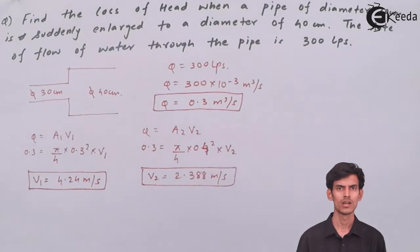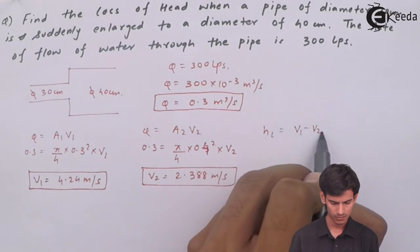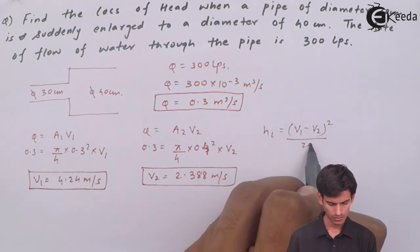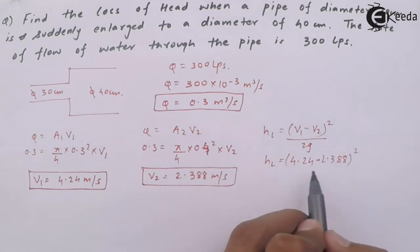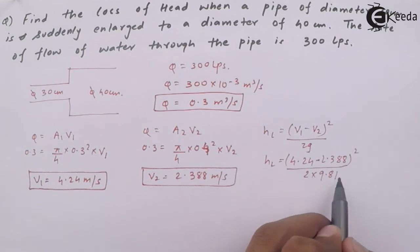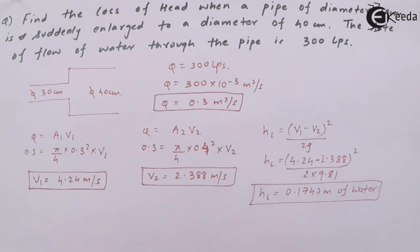Since it is sudden enlargement, we've already derived the formula in last class. The formula for head loss for sudden enlargement is (v1 - v2)² divided by 2g. So the head loss comes out to 0.1747 meters of water. That was all about this question. I hope you've understood this. Thank you.